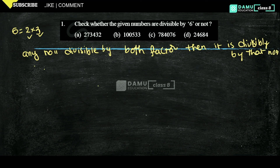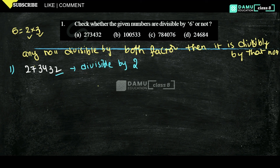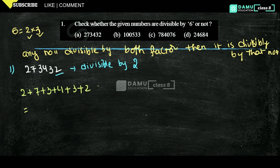Let's take our first number: 273432. We need to check if it is divisible by both 2 and 3. The unit digit is 2, so it is divisible by 2. Now we check divisibility by 3 using the sum of digits: 2 + 7 + 3 + 4 + 3 + 2.